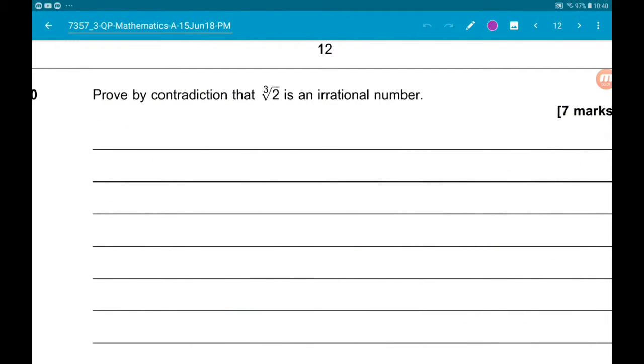Okay, question 10. Last one on the CoreMaths, 7 marks. Prove by contradiction that the cube root of 2 is irrational.